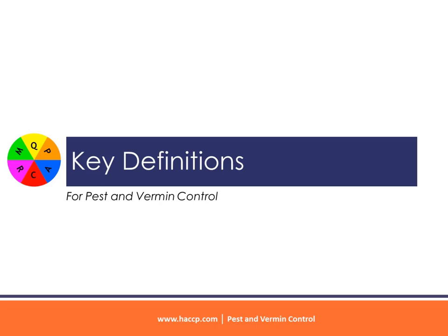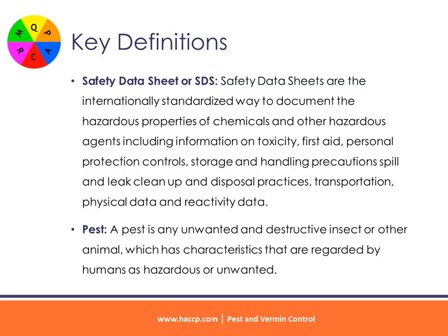Pest and Vermin Control: Key Definitions. Safety Data Sheet (SDS): Safety Data Sheets are the internationally standardized way to document the hazardous properties of chemicals and other hazardous agents, including information on toxicity, first aid, personal protection controls, storage and handling precautions, spill and leak cleanup, disposal practices, transportation, physical data, and reactivity data.